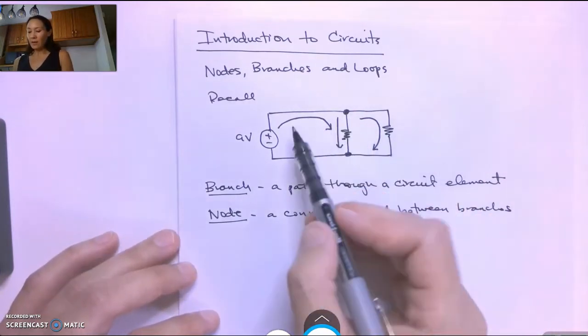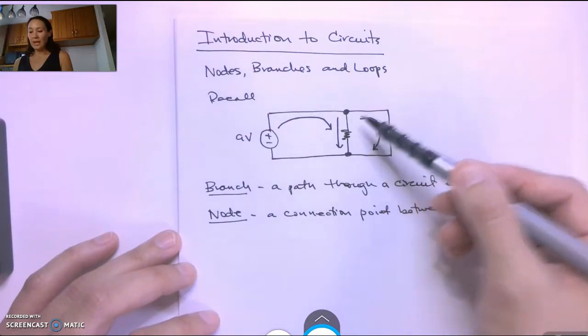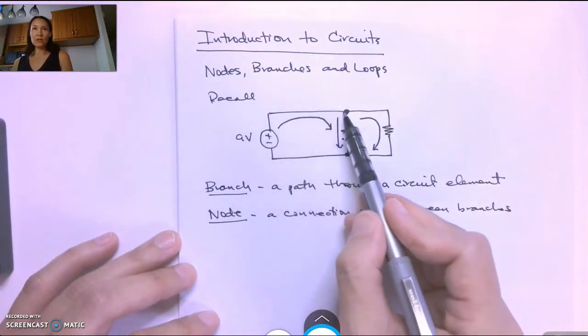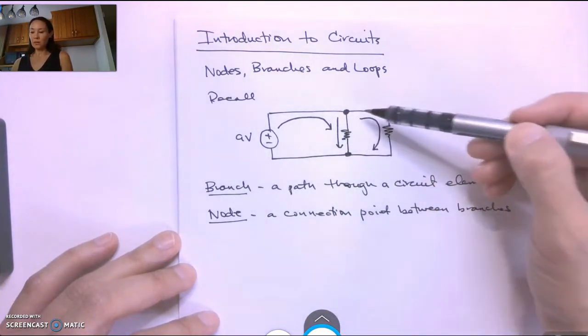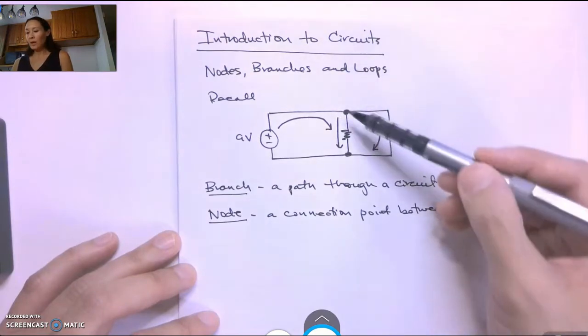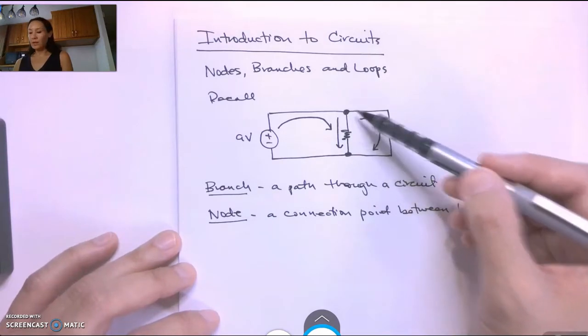Now what I usually like to think about is I think of a node as a place where the current can split. Because if the current comes from this source it's going to reach this node and then it can decide either to take this path down this first resistor or take this path down the second resistor. The point at which it can split between branches is what I think of as a node.